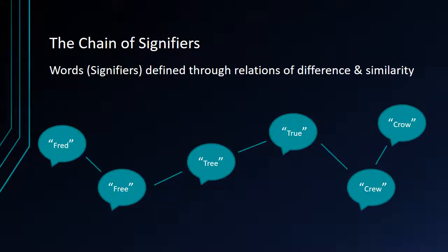Now if the word is not tied to a specific thing, if it's not anchored in a thing but actually refers to an abstract concept, how do we understand how words work? Well, very simply, in what he calls the chain of signifiers, words are defined through their relations of difference and similarity — words just sound different from each other. So 'tree' is different from 'true,' different from 'crew,' different from 'crow,' different from 'free,' and so on in any direction. We can tell that words are different from each other not because the word has an attachment to some specific thing in reality, but because the word sounds different.